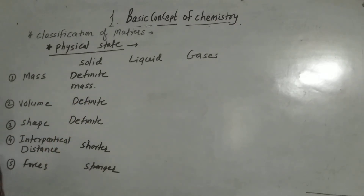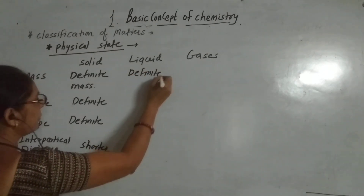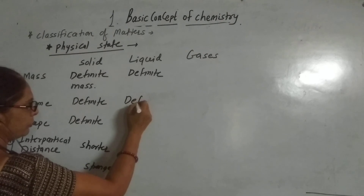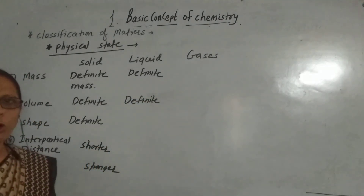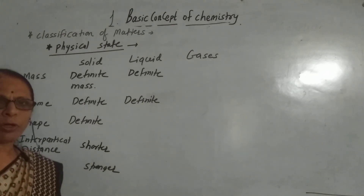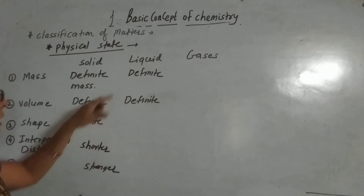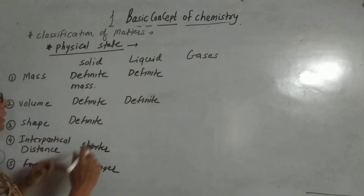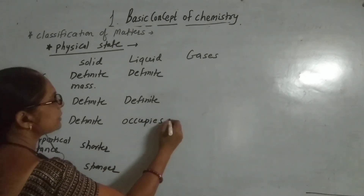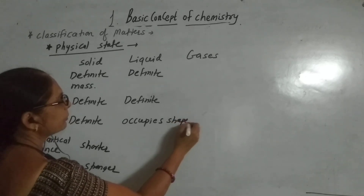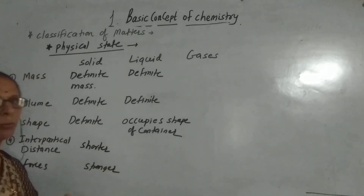What about liquids? We know that liquids also have definite mass and definite volume. But they can acquire the shape of the container. Suppose water — if I consider a glass of water and pour it into a bucket, it takes the shape of the bucket. So they have definite mass and definite volume, but the liquid occupies the shape of the container in which we pour it.